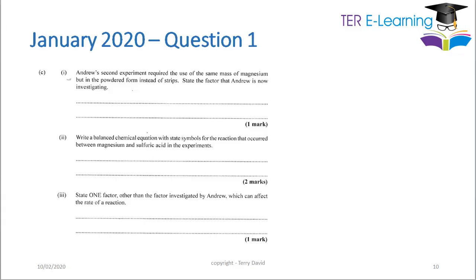Andrew's second experiment used the same mass of magnesium but in powdered form instead of strips. The factor that Andrew is now investigating is surface area. He's trying to determine how surface area affects the rate of a reaction.